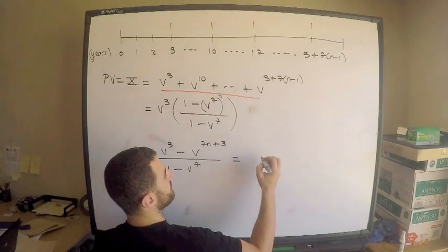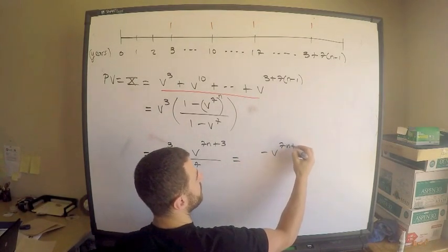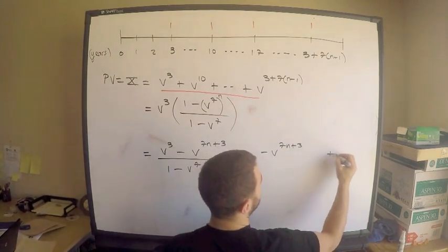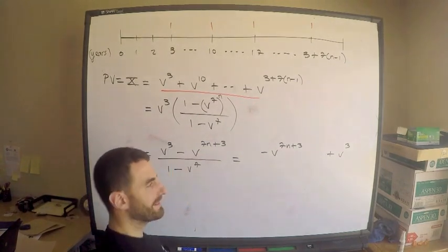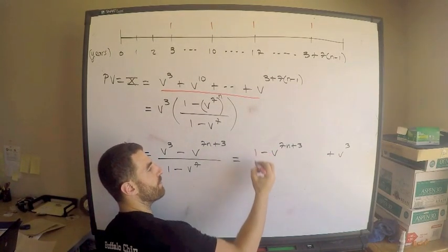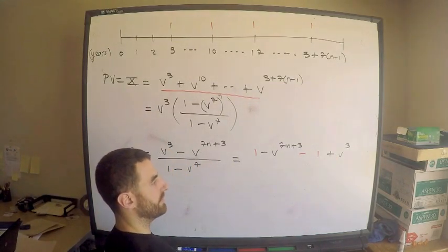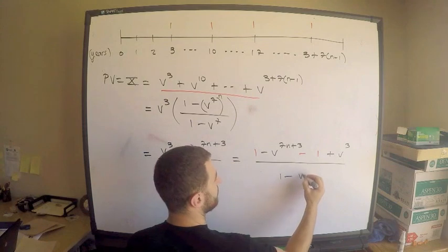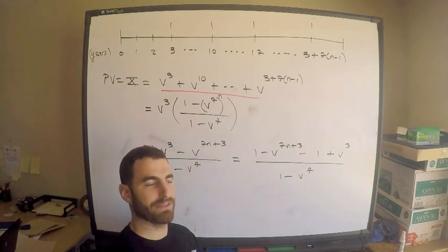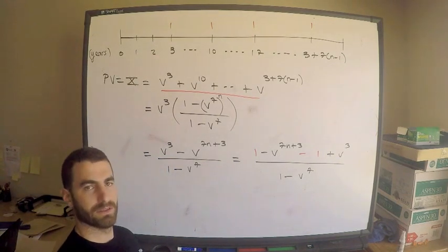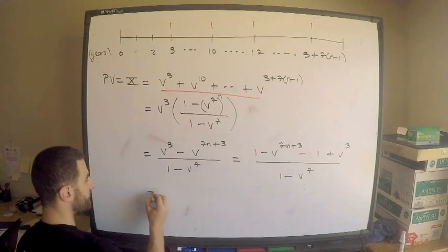So I plan this is equal to the following. I'm going to do it this way. This is, I'm going to put it this way, negative v to the 7n plus 3, and then I have plus v cubed. I'm going to cleverly add zero. How about I add one and then I subtract one? I've added zero, right? That's legal. One minus v to the seven, perfectly legal. That added zero to the numerator, changed nothing about the expression, no big deal.